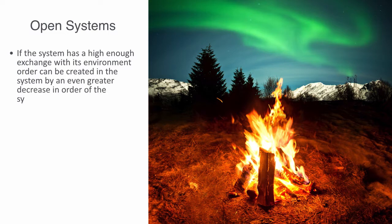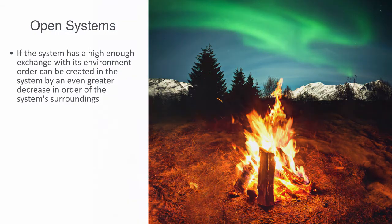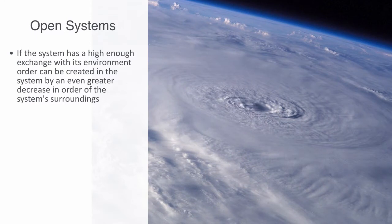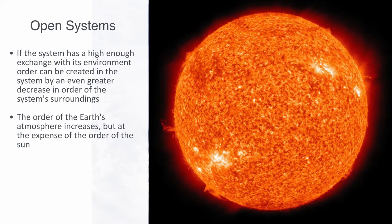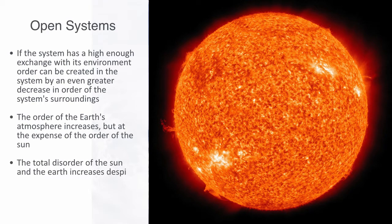If the system has a high enough exchange with its environment, order can be created in the system by an even greater decrease in order of the system's surroundings. In the hurricane example, hurricanes are formed from unequal heating within the atmosphere. The Earth's atmosphere is then far from thermal equilibrium. The order of the Earth's atmosphere increases but at the expense of the order of the sun. The sun is becoming more disorderly as it ages, and throws off light and material to the rest of the universe. The total disorder of the sun and Earth increases despite the fact that orderly hurricanes are generated on Earth.